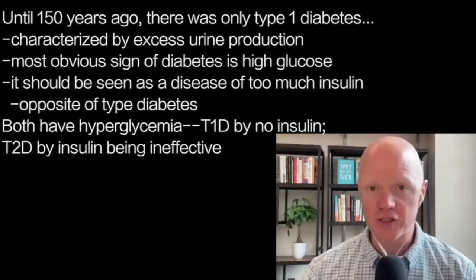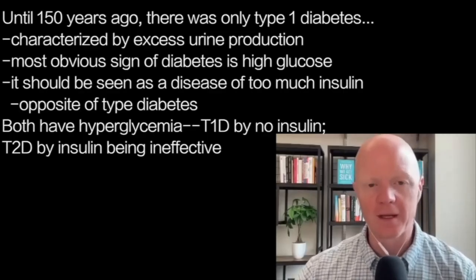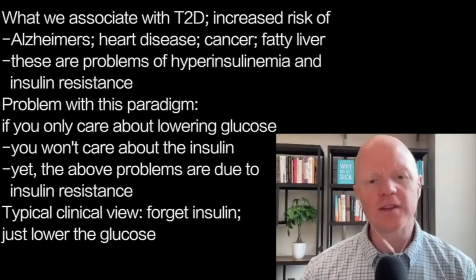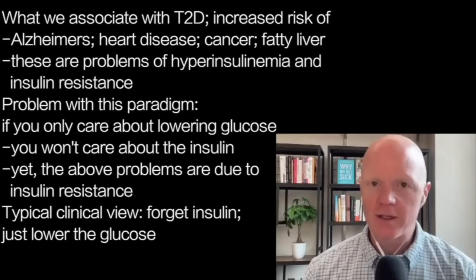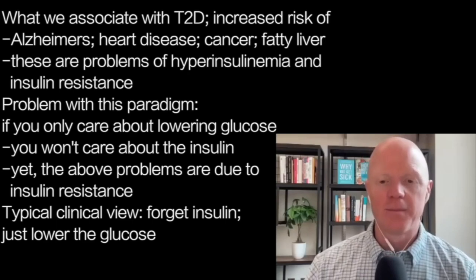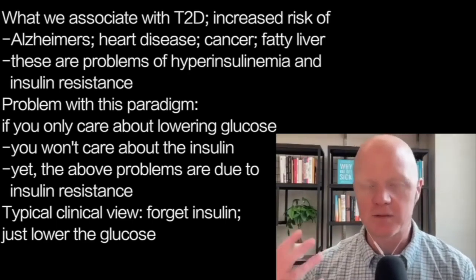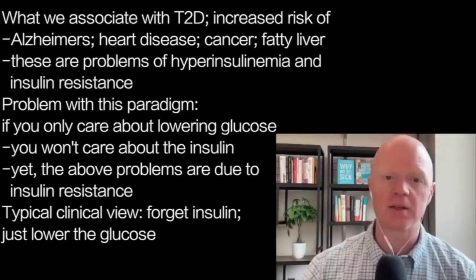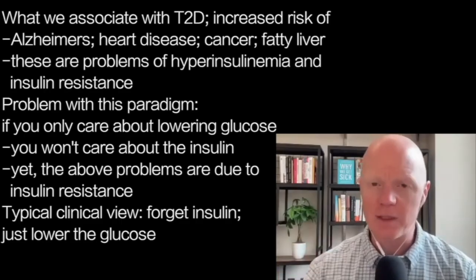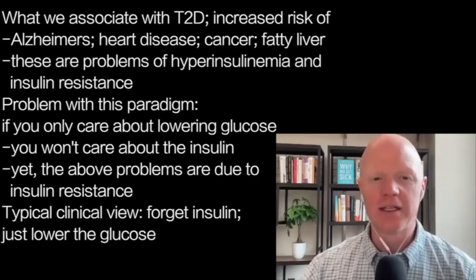In the case of type 1 diabetes, it's a true deficiency of insulin. In type 2, the insulin isn't working well — in other words, insulin resistance. I don't want you to think high glucose isn't a problem; chronic hyperglycemia is pathogenic and can harm the body. However, so much of what we associate with type 2 diabetes — the increased risk of Alzheimer's disease, cancer, heart disease, and fatty liver disease — are not problems of hyperglycemia but of hyperinsulinemia, the high insulin and associated insulin resistance.